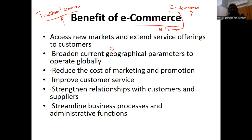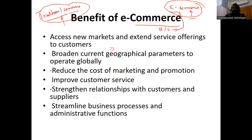The major advantage of traditional commerce over e-commerce is that you can see, feel, and examine the product before buying. For example, at a textile shop you can wear the clothes and check the fabric thickness. In e-commerce, you can only see images and read reviews from existing customers. You don't know exactly how the product looks until it is delivered to you.